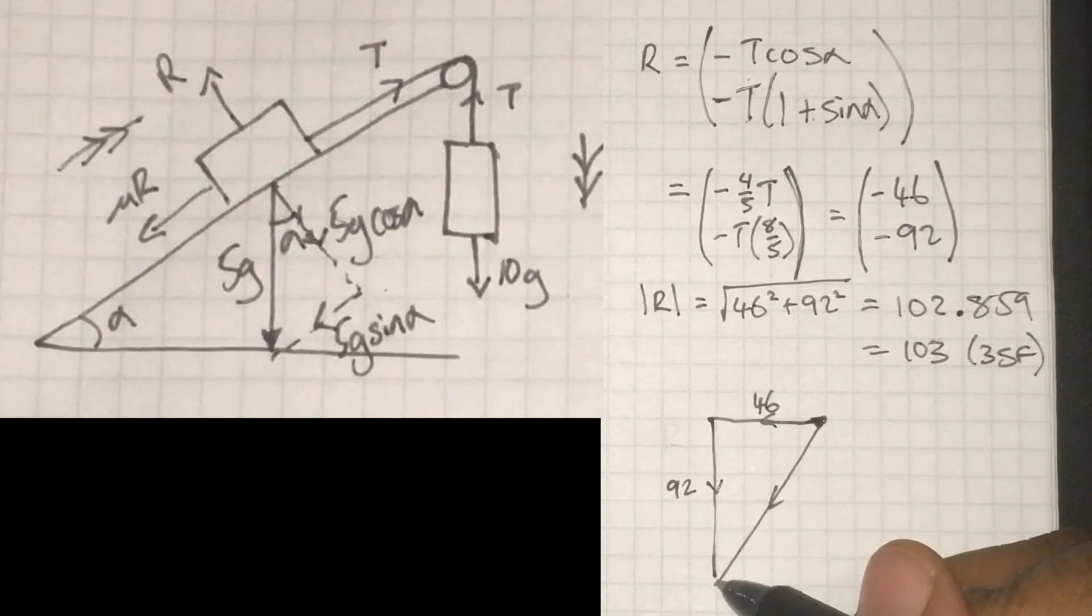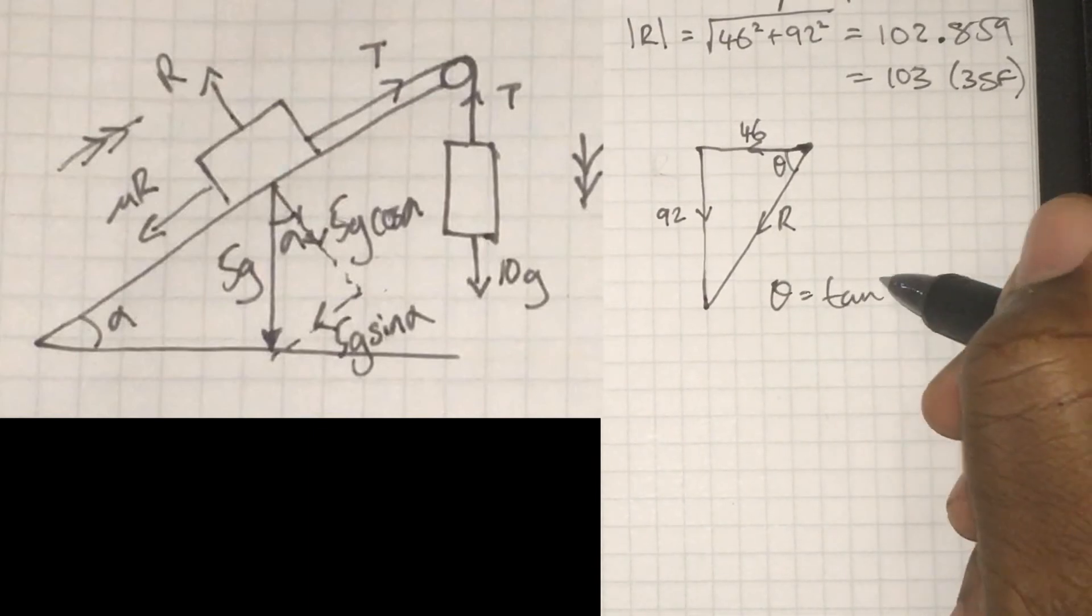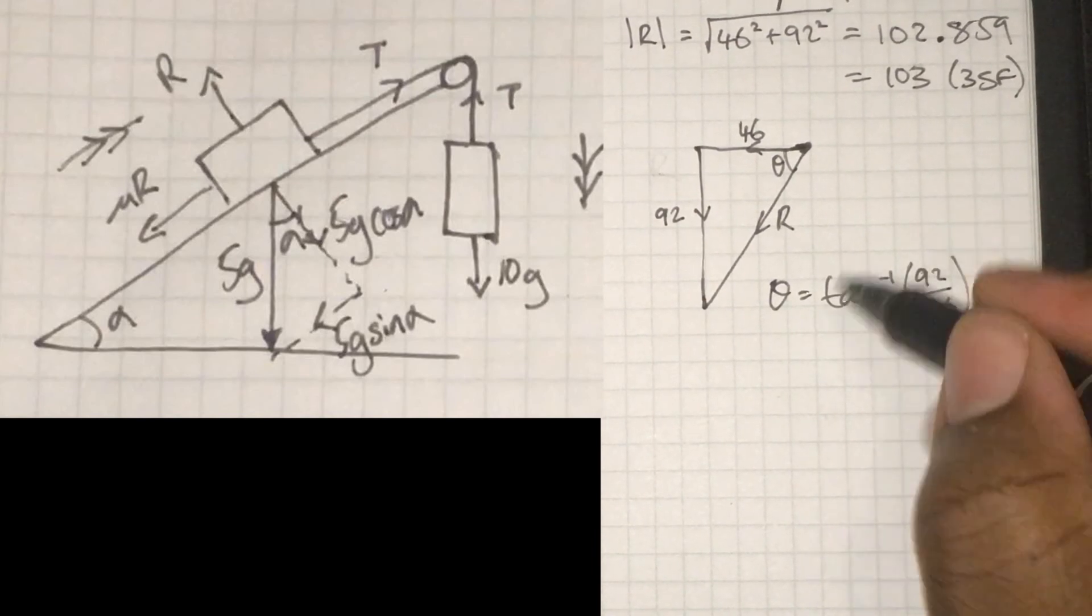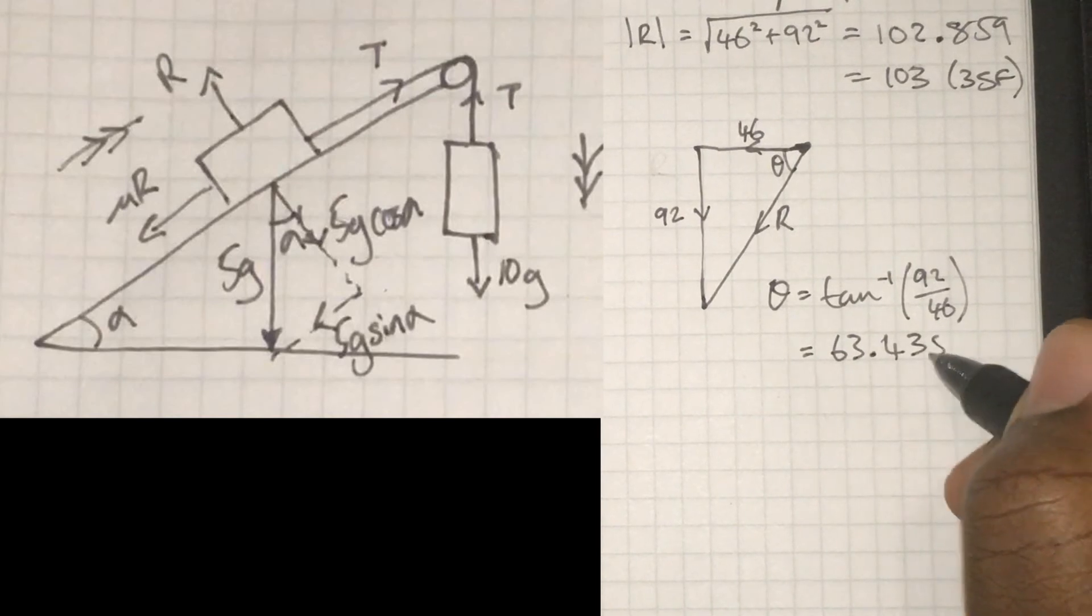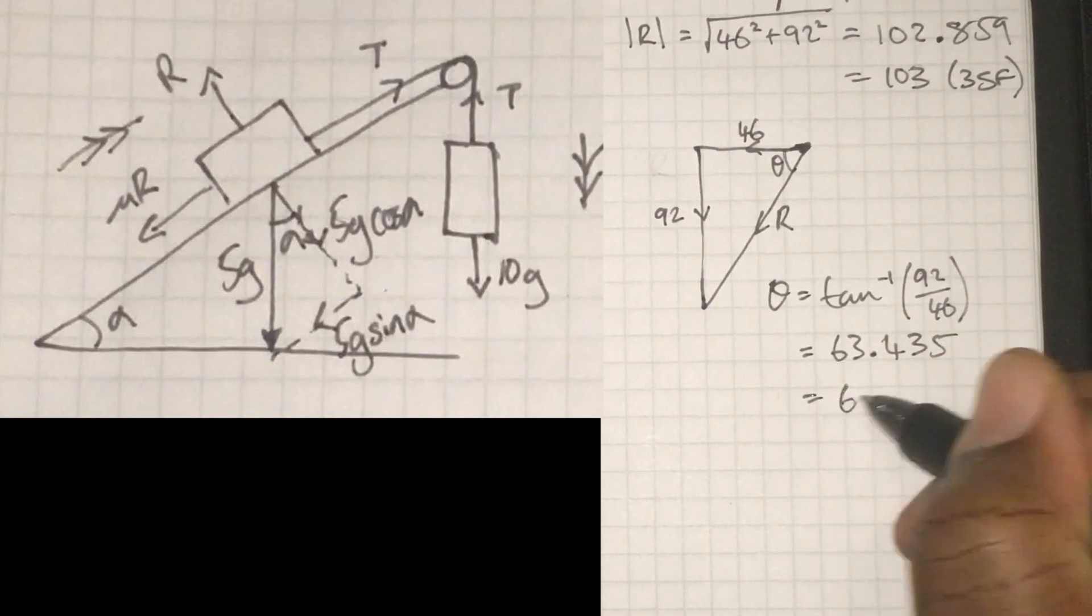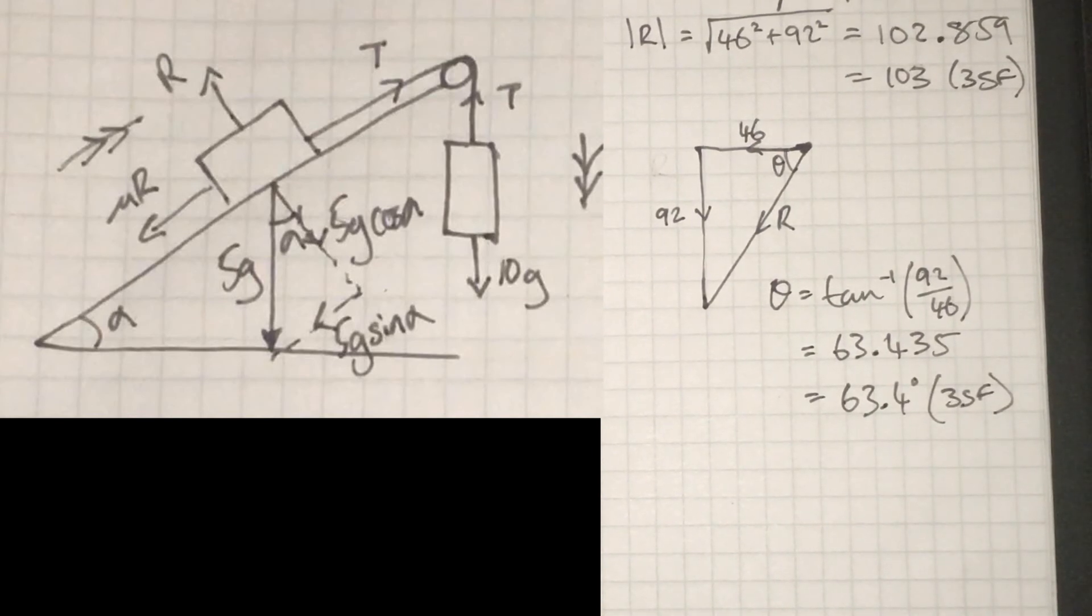If I was asked what direction the force acts in, I'm going to use a spot of trigonometry. So inverse tan of 92 over 46 gives me 63.435. We're going for three significant figures again, 63.4 degrees below the horizontal.